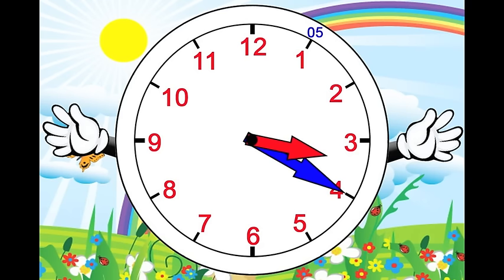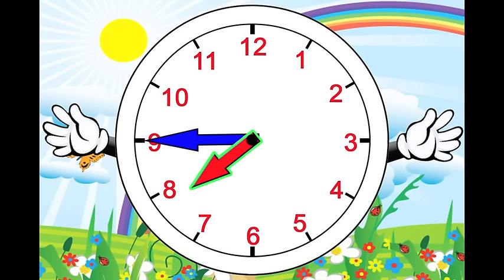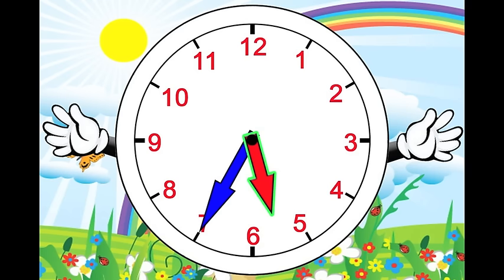Now it's the hour of 7 and the minute hand is pointing to — 5, 10, 15, 20, 25, 30, 35, 40, 45. It's 7:45. One more. The hour is 5. The minute is 5, 10, 15, 20, 25, 30, 35. It's 5:35.